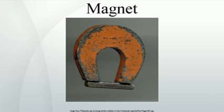Some electric motors rely upon a combination of an electromagnet and a permanent magnet, and, much like loudspeakers, they convert electric energy into mechanical energy. A generator is the reverse — it converts mechanical energy into electric energy by moving a conductor through a magnetic field.